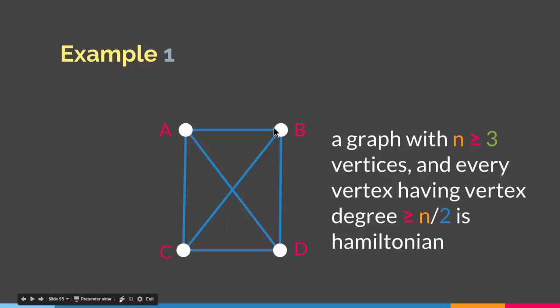Therefore, this particular graph should have a Hamiltonian circuit, and it does. We can start from A, then go to B, go to D, go to C, and then come back to A where we started. As you can see, this graph satisfies the condition of Dirac's theorem, therefore it has a Hamiltonian circuit, meaning it is Hamiltonian.